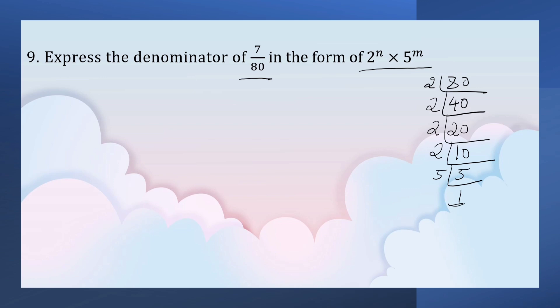80 can be written in the form of 2 to the power of 4 into 5 to the power of 1. So 7 by 80 is equal to 7 by 2 to the power of 4 into 5 to the power of 1.